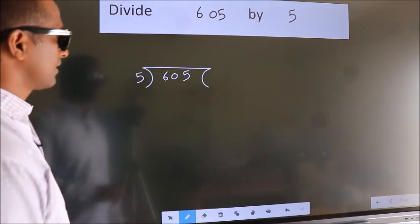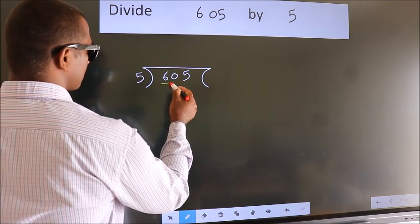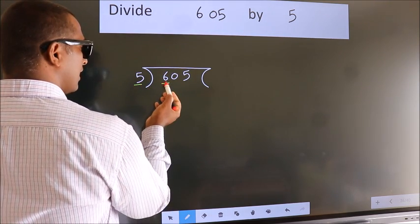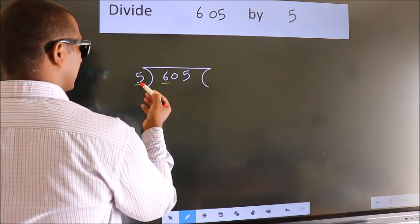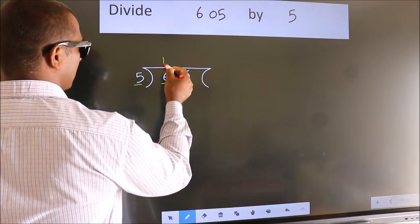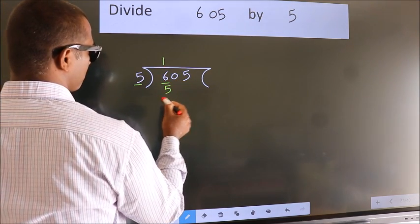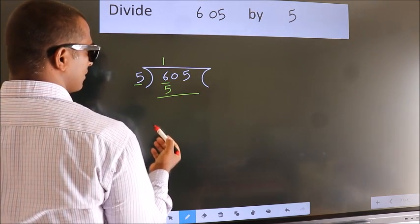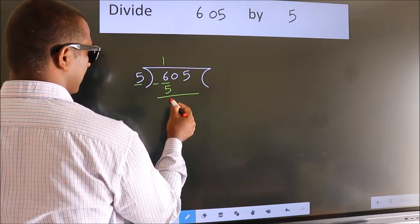Next, here we have 6, here 5. A number close to 6 in the 5 table is 5 once 5. Now we should subtract. We get 1.